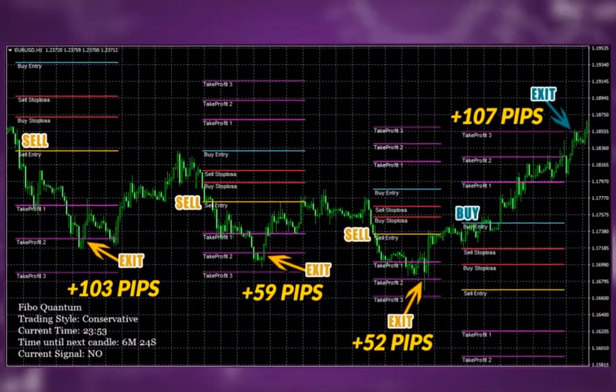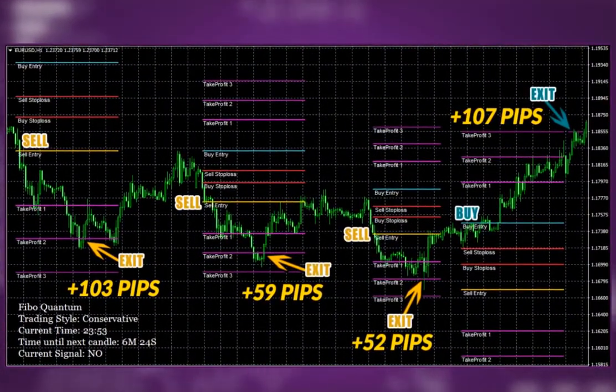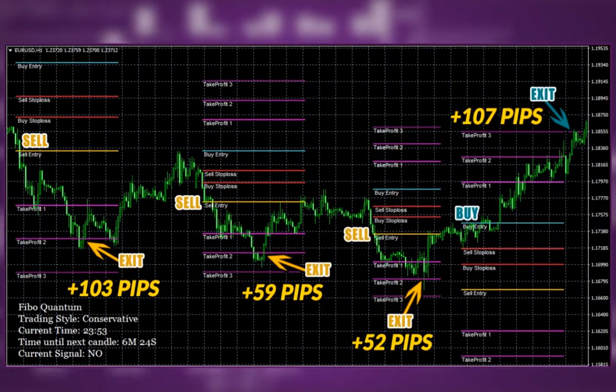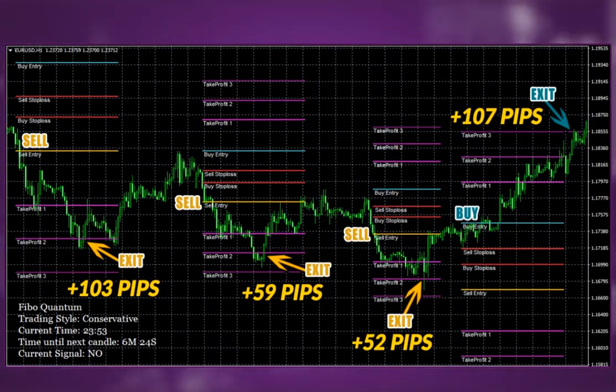Here's an impressive series of wins on Euro, US dollar. 103, 59, 52 and 107 pips. 4 wins and no losses.